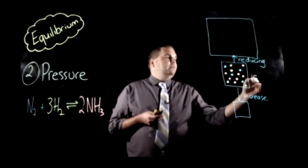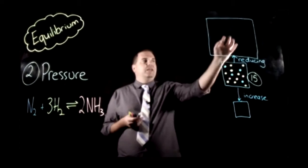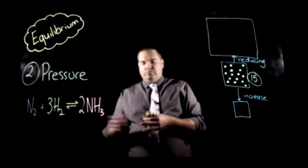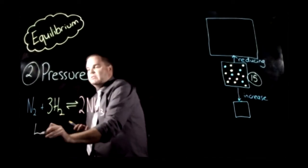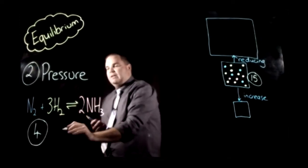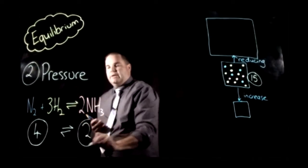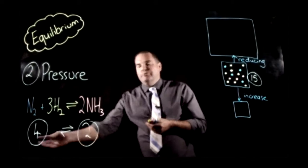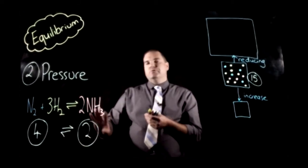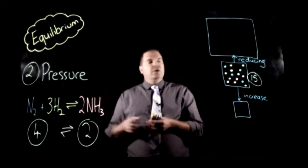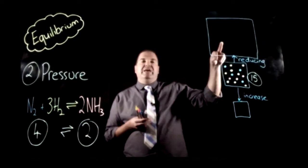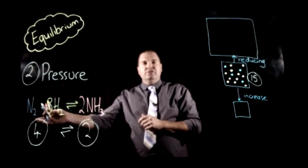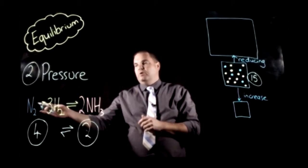So we've got 15 molecules here originally. What we want to try and do is increase that number in the larger space. In our reaction we've got one mole of nitrogen and three moles of hydrogen forming two moles of ammonia - so in total on the reactants side we've got four gaseous moles in equilibrium with two gaseous moles on the products side. So the forward reaction reduces the number of gaseous moles, and the back reaction increases them. So to go from a smaller to larger container we want to increase the number of moles to exert the same pressure - we're going to favour the back reaction and take ammonia to form more nitrogen and hydrogen.